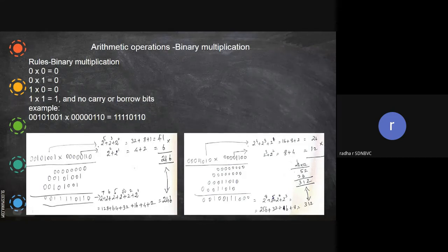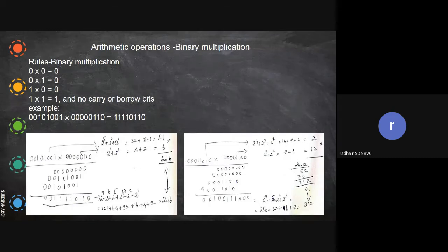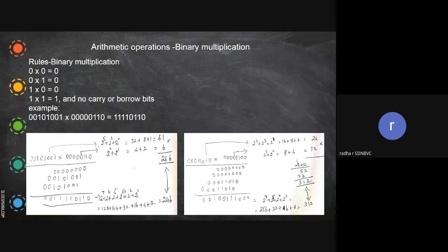We have to find the decimal equivalent to check our answer. Always when you do binary — because binary is not familiar to us — any binary addition, subtraction, or whatever operation in your exams, when a question is asked, you have to find the decimal equivalent and verify your answer. Otherwise you may not know whether your answer is correct. When I am correcting the paper, I want to know whether you know everything, so decimal verification is mandatory.